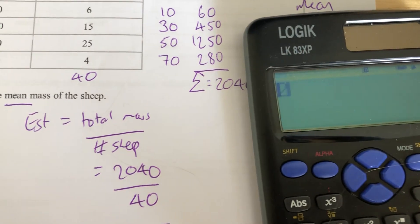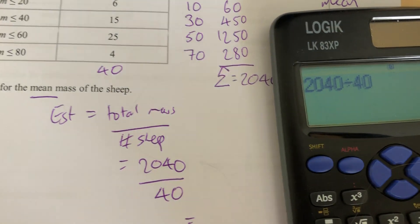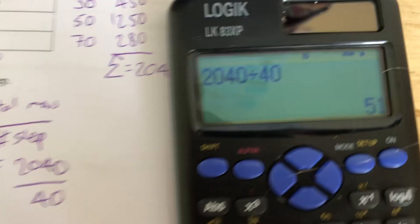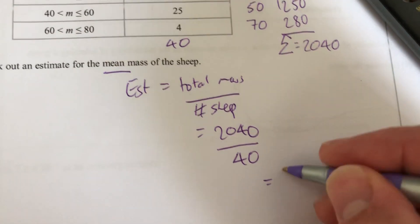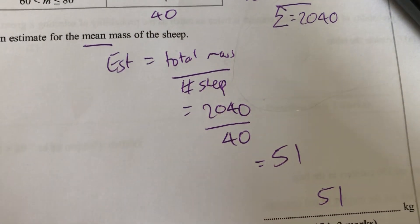2,040 divided by 40 is 51. It's always worthwhile, so the final answer to fit in there is 51 kilograms.